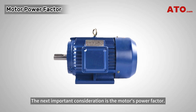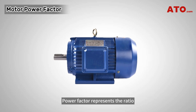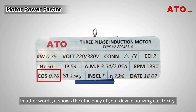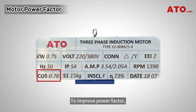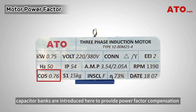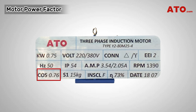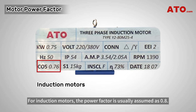The next important consideration is the motor's power factor. Power factor represents the ratio between active power and apparent power — in other words, it shows the efficiency of your device utilizing electricity. To improve power factor, capacitor banks are introduced to provide power factor compensation by canceling out the inductive or lagging reactive power of the motor. For induction motors, the power factor is usually assumed as 0.8.